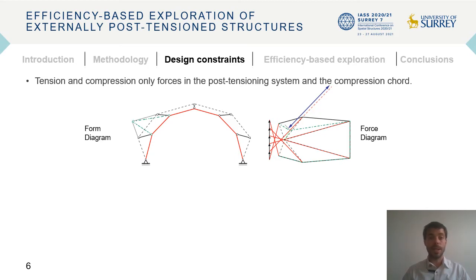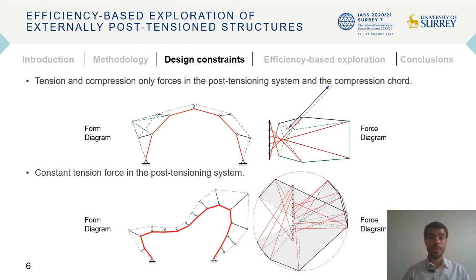To achieve that, a domain can be defined for each point in the force diagram that ensures that the elements of the structure remain either in tension or compression. Another constraint that can be imposed on the design is to maintain a constant tension force throughout the post-tensioning system. This can be achieved by making the vectors in the force diagram representing the forces in the post-tensioning system to be the radius of a circumference centered at the pole of the funicular construction.